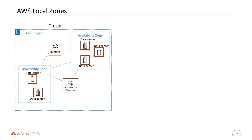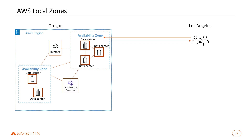AWS local zones are a relatively new capability. We already know about AWS regions and their availability zones. However, you may have users in a location like Los Angeles that want low-latency access to your application running in the Oregon region. The nearest AWS region might be Oregon, which works, but there's still some latency between Los Angeles and Oregon, impacting the user experience.